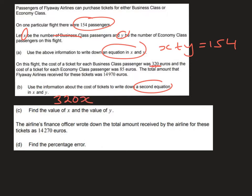For example, if two tickets were sold we'd get 640 euros. Similarly, for economy class passengers, if the ticket is 85 euros and we sold Y tickets, the revenue from that is 85Y. We don't know X and Y yet, but we know the airline received 14,970 euros in total.